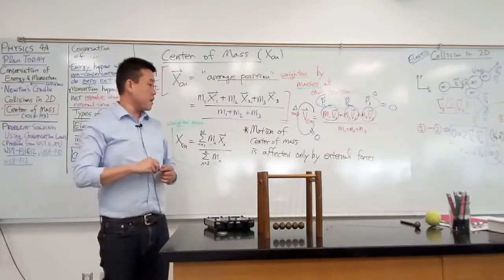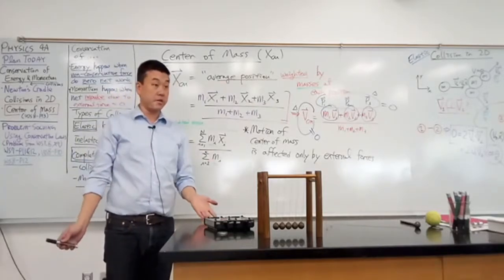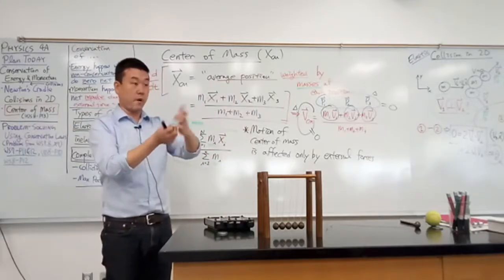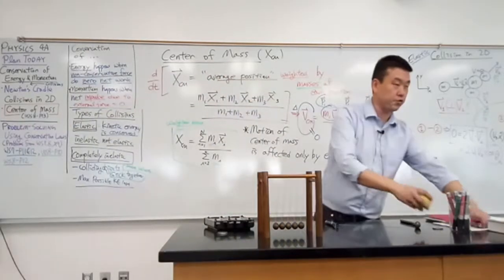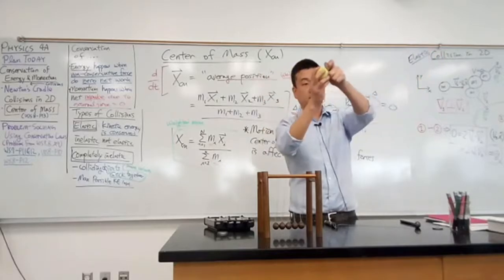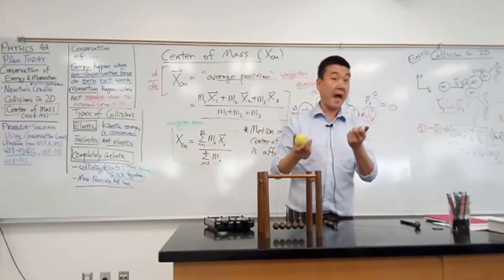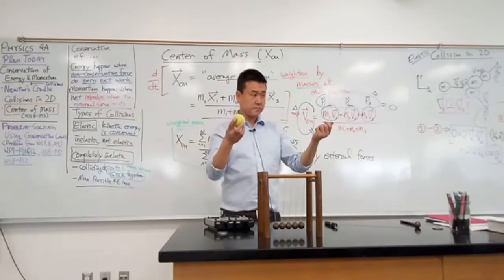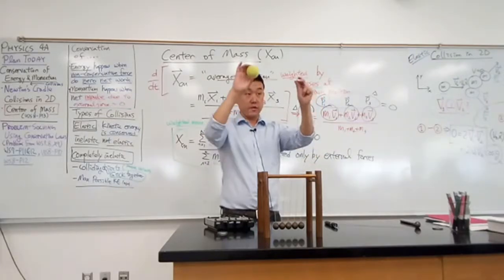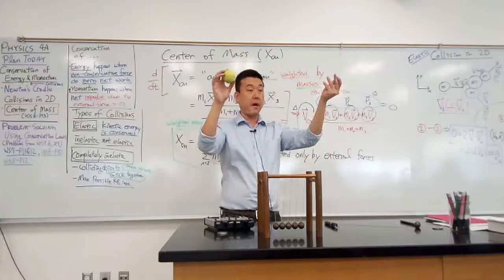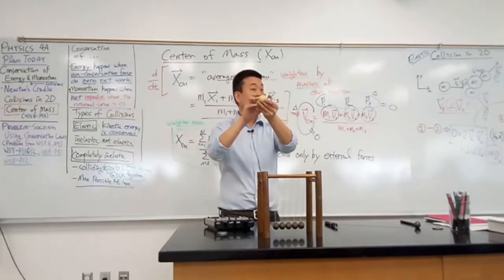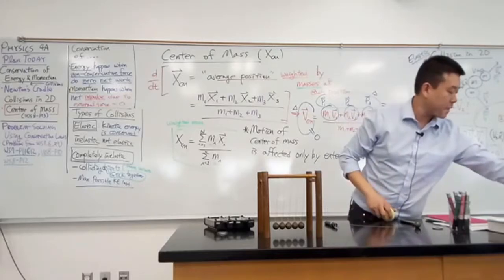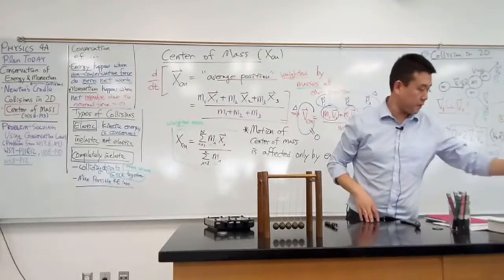So the motion of center of mass is affected only by external forces. That means if there's some complicated interaction — for example, if two balls come in and hit a tennis ball — then I can say without analyzing anything that the center of mass of these three particles, even through whatever complicated interaction, will not be affected. It's useful for certain types of problems.